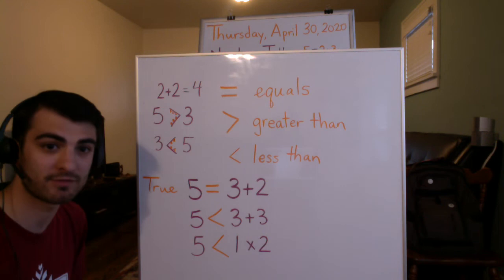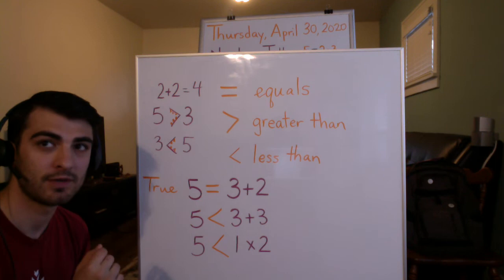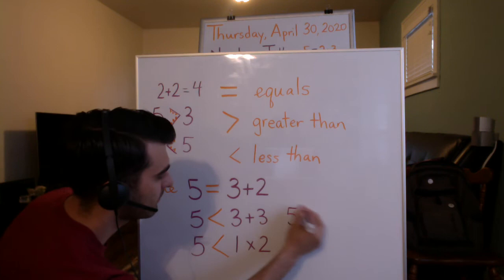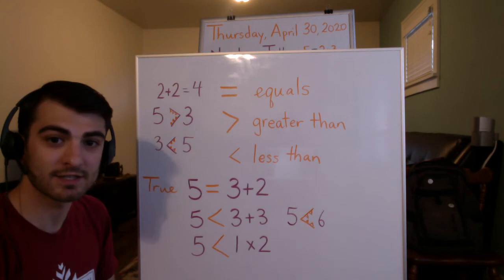This next one says 5 is less than 3 plus 3. Well, let's figure out what 3 plus 3 is — 3 plus 3 is 6. So I can rewrite this as: 5 is less than 6. Is the alligator mouth eating the bigger number? It sure is. So this statement is also true.